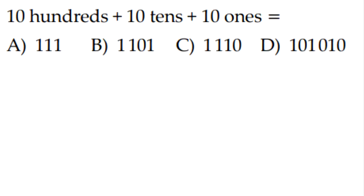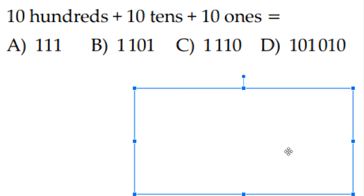The next question is: 10 hundred and 10 tens plus 10 ones equals. So 10 hundred equals 1,000, 10 tens equals 100, and 10 ones equals 10. So it would be 1110, which is C.